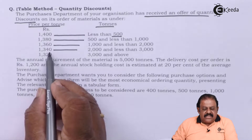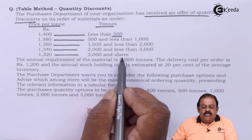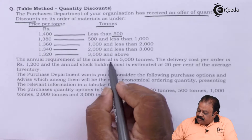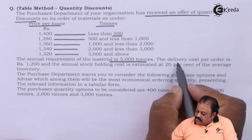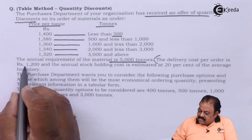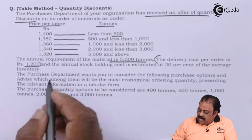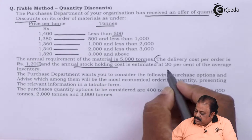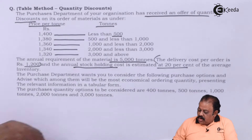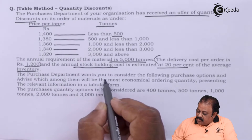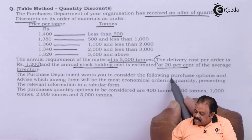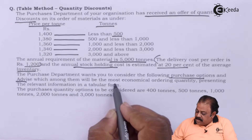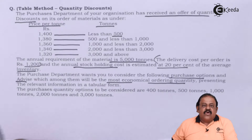Further discount: 1340 per ton if order is 2000 but less than 3000 tons; 1320 per ton if order is 3000 and above. The annual requirement of material is 5000 tons, the delivery cost per order is 1200, and the annual stock holding cost (carrying cost) per unit is 20% of the average inventory. The purchase department wants you to find the most economical ordering quantity.